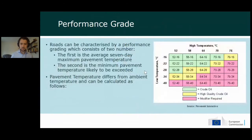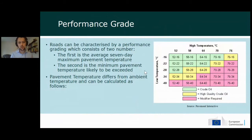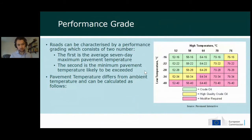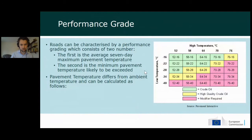A performance grade of 52 and −16 means a road can operate efficiently at temperatures up to 52°C and as low as −16°C. Pavement temperature is generally hotter than ambient air temperature. We look at the previous 30 years of historical climate data to assess what performance grade fits all roads across Europe, then look forward to 1.5°C, 2°C, and 3°C warming levels to see how often roads will operate outside their performance grade — leading to higher maintenance costs.